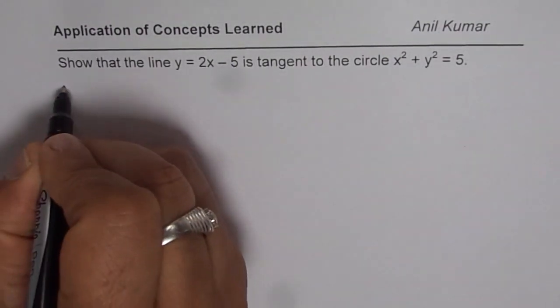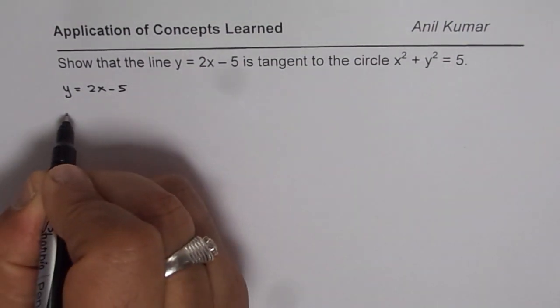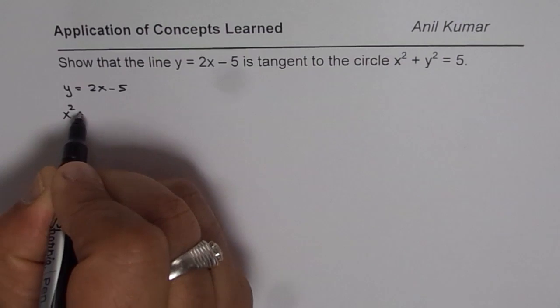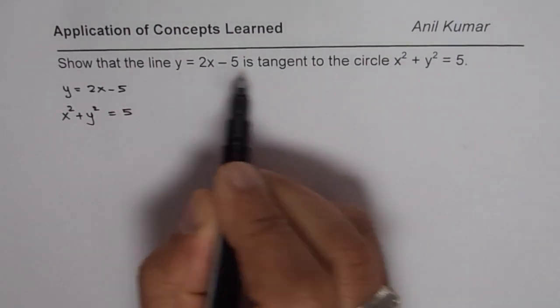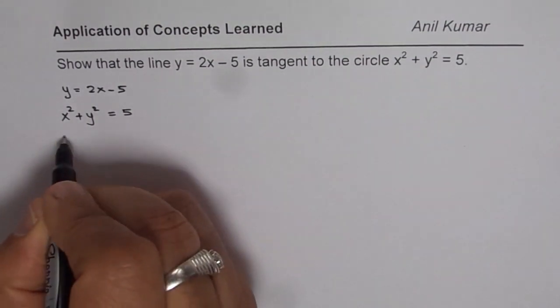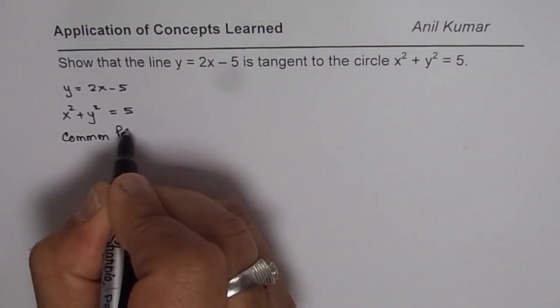So we say that the line is y equals 2x minus 5 and the circle is x square plus y square equals 5. If the line is tangent, they have a common point. That is what is important.